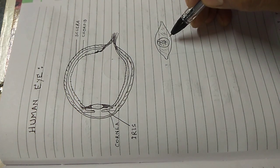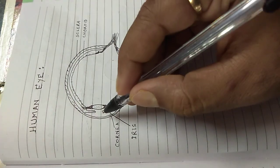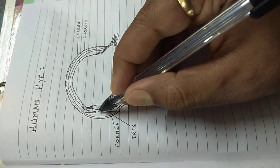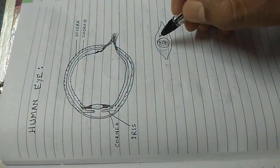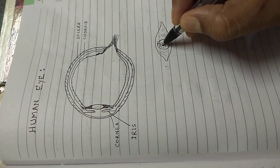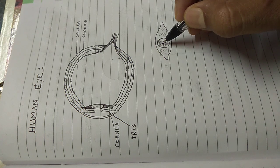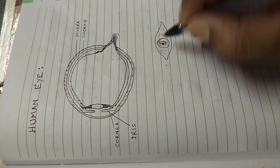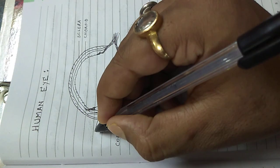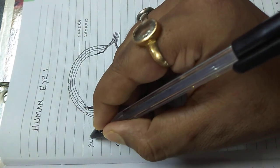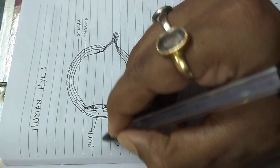This iris has an opening in the center. No matter what is the color of your eye, the central portion is always black. It is black because it is an opening and you are actually seeing the interior of the eye. This particular hole is called the pupil through which light will enter into the eye.